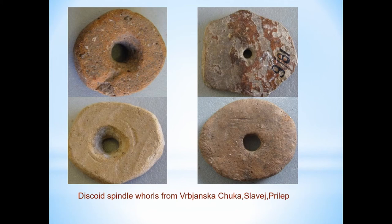Discoid spindle whorls are probably the earliest form of spindle whorls and the most often found form from early Neolithic settlement horizons, with their use continuing in later horizons. Unlike the clay spindle whorls, the earliest discovered stone discoid whorls are from the Middle Neolithic. In these settlements, biconical whorls are not detected. Generally, biconical spindle whorls are rarely found in Neolithic sites in Macedonia. They are discovered in the Middle Neolithic horizons of settlements and their use continues into the Late Neolithic.